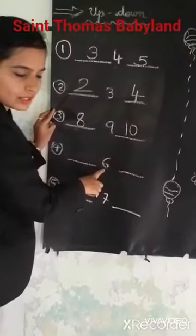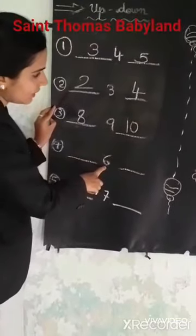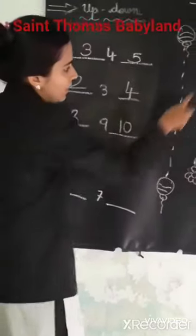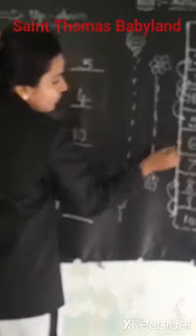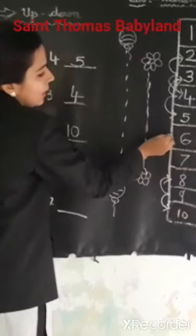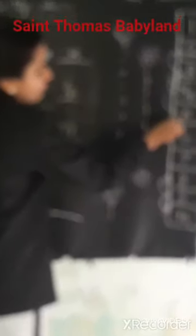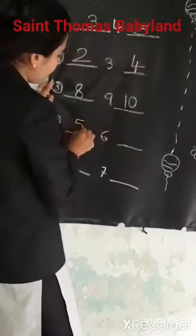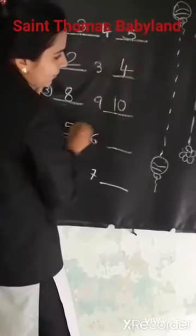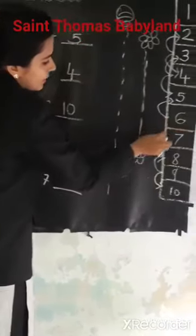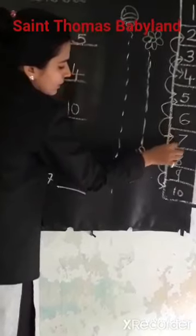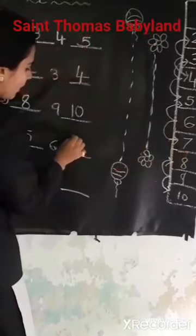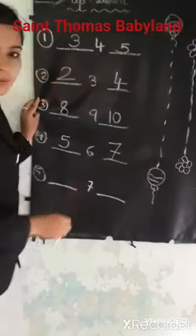What is this? This is 6. Where is 6? Here. 6 up, what will come? 5. So I write here 5. 6 down, what will come? 7. So I write here 8.